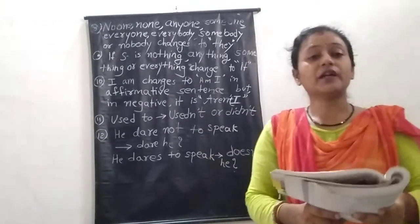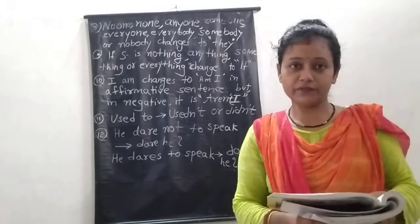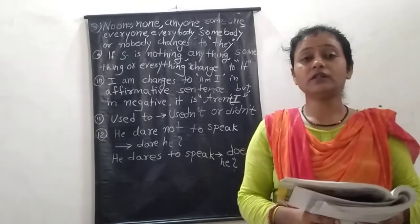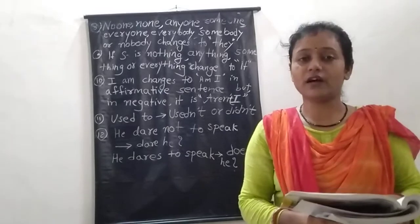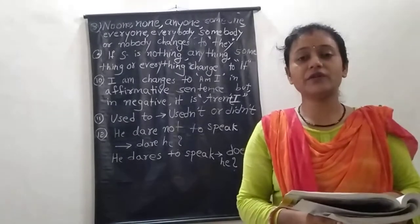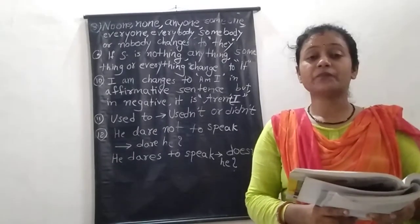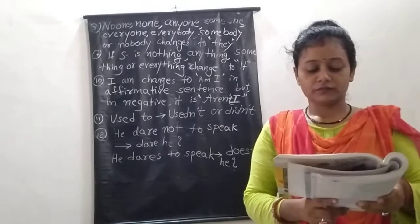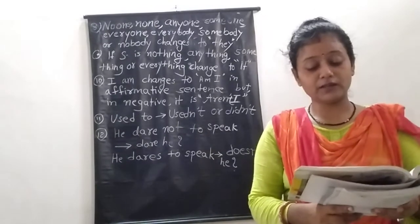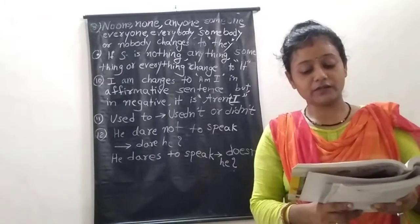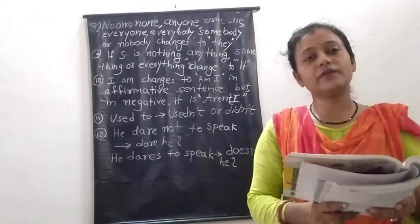First example: 'Ram is going to the job.' 'Is' is the helping verb, so the question tag will be 'isn't he', because Ram is a noun referring to a male, and according to gender we change it to 'he' as the pronoun. Next: 'Sita is not cooking' — then we write 'is she', because Sita is female gender.